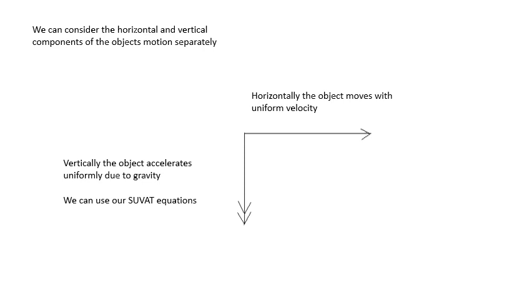I keep saying ignoring air resistance. I'm not going to say it anymore. Horizontally, the objects move with uniform velocity. Vertically, the object accelerates uniformly due to gravity. 9.8 meters per second squared. And so, you can use your Suvat equations. So, vertically, Suvat equations. Horizontally, it's just velocity is distance over time.